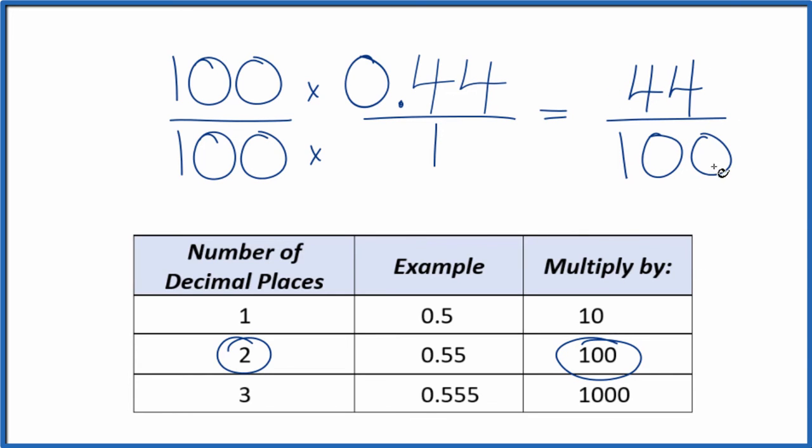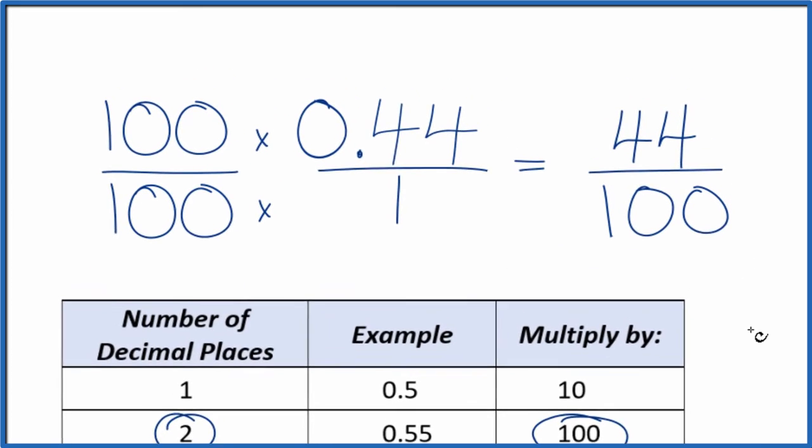So now we have our fraction. And we can simplify this further, because they're both even numbers. Let's divide 44 by 2 and 100 by 2. So let's give ourselves some room here.